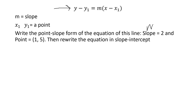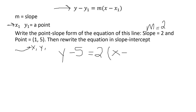Slope is two, and remember m is slope, so m equals two. x1 and y1 are the values given in a point. Here is our point, which means x1, y1. All we have to do is plug those values into the point slope formula — x and y stay as x and y, and x1 and y1 are the values from the point. So y minus y1, which is five, equals m, which is two, times x minus x1, which is one.